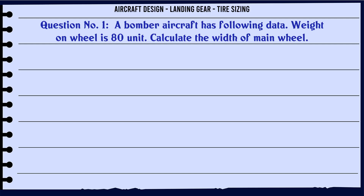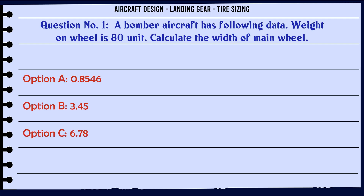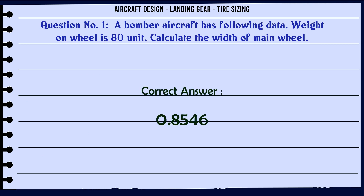A bomber aircraft has the following data. Weight on wheel is 80 units. Calculate the width of the main wheel. A) 0.8546, B) 3.45, C) 6.78, D) 0.2345. The correct answer is 0.8546.